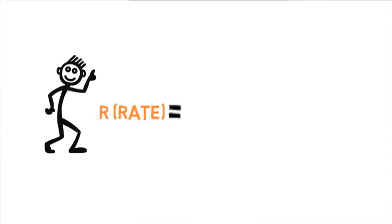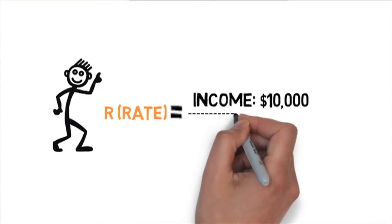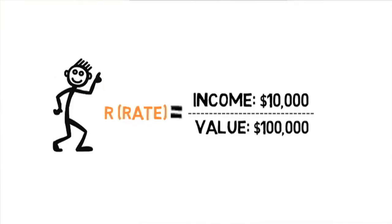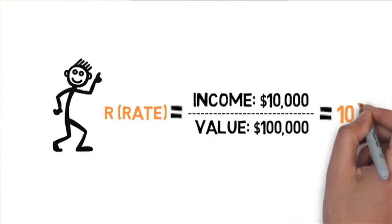For example, if the income produced by the property is $10,000 and the value of the property is $100,000, then you guessed it, the rate is 10%.